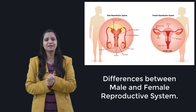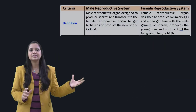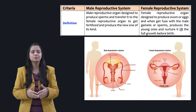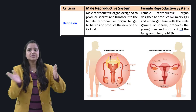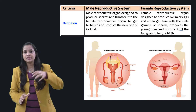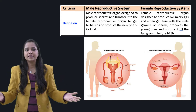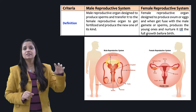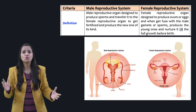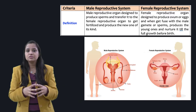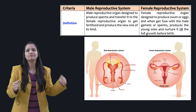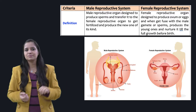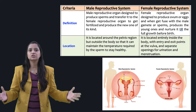I have designed a table to illustrate the differences between the male and female reproductive system. First, the definition: the male reproductive system is designed to produce sperms and transfer them to the female reproductive organ to get fertilized and produce new offspring. The female reproductive system is designed to produce ovum or eggs, which when fused with the male gamete or sperm, produces and nurtures young ones until birth.